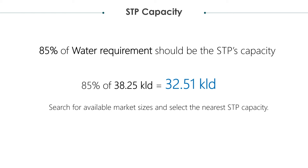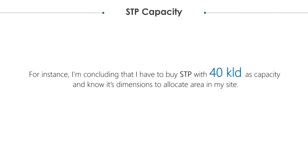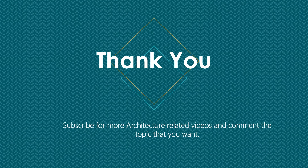Now search for the capacity available in the market. For instance, I'm concluding that I have to buy an STP with 40 kiloliters per day as capacity, and know its dimensions to allocate area in my site.